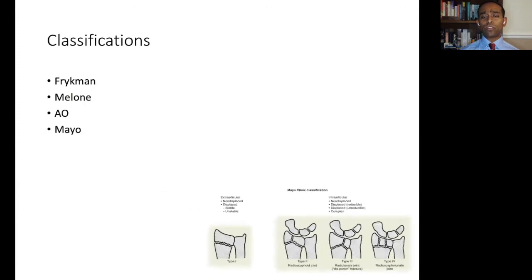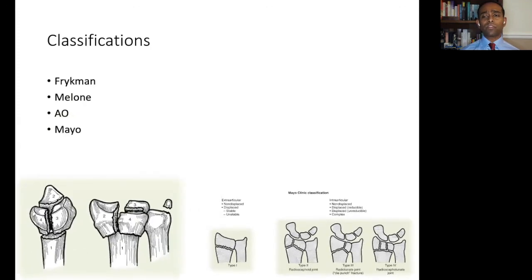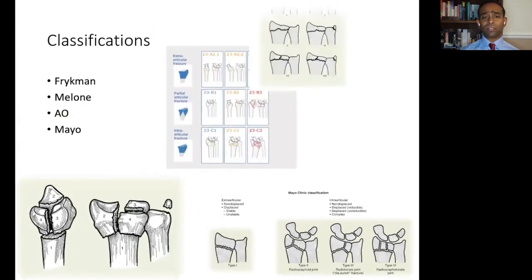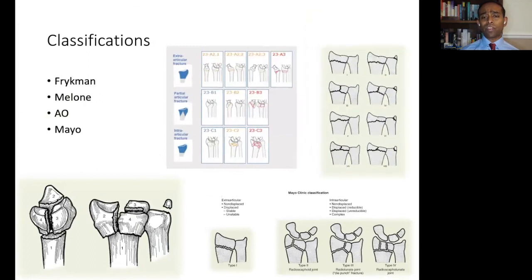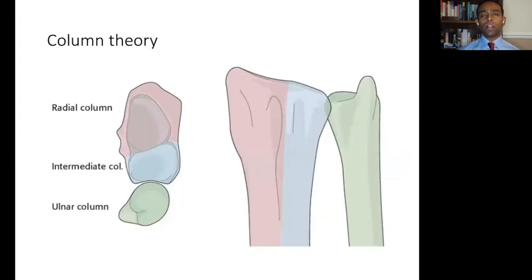There have been a whole host of classification systems developed to apply to distal radius fracture patterns. However, they've all been shown to have questionable inter- and intra-observer reliability. It is rare for them to be used outside of the research environment, but there are a couple of aspects worth being aware of.